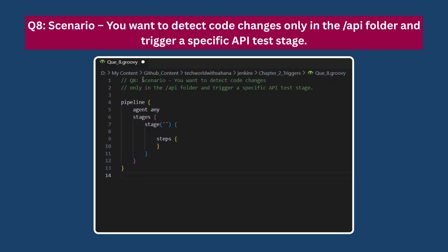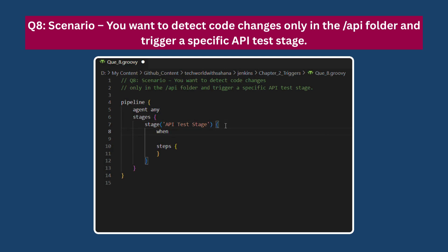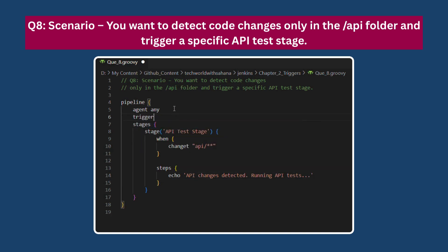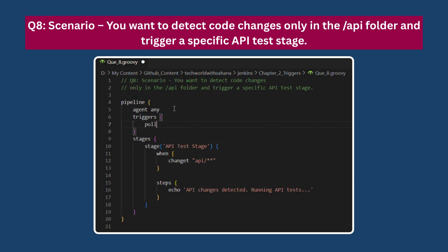Next automation: You want to detect code changes only in the api folder and trigger a specific API test stage. In this scenario, we use a 'when' statement in the pipeline. First, create a stage named 'run api test' and add a when block that uses a changeset pattern with 'api/**'. The double-star indicates that api is a folder and any changes inside it or its subfolders will trigger this particular stage. When polling the SCM every 30 minutes, if any change is detected within the api folder, the stage will be triggered accordingly.